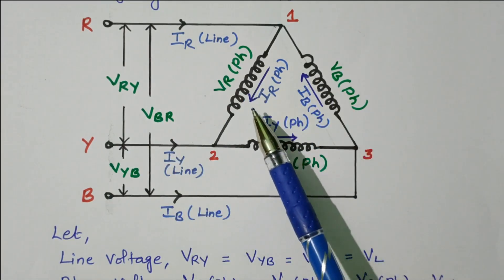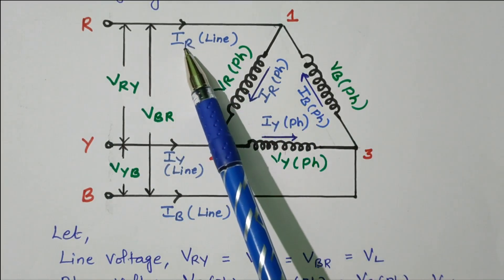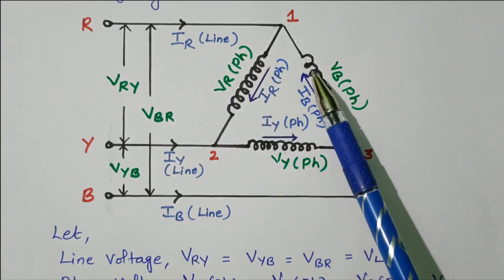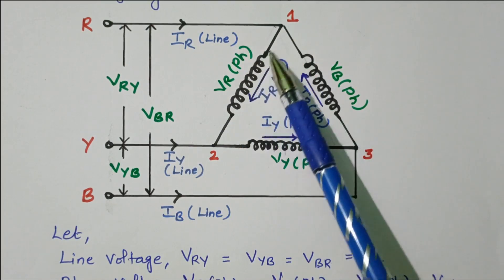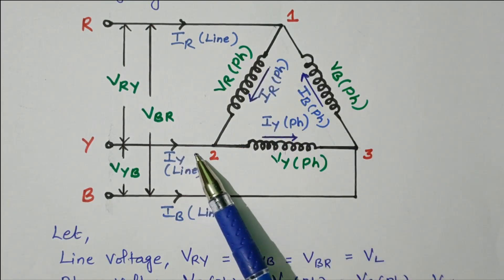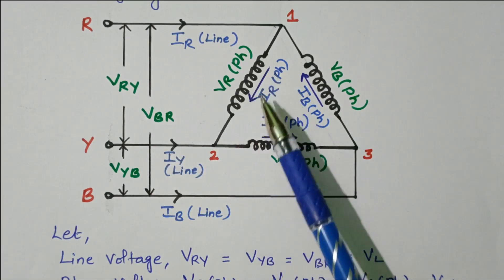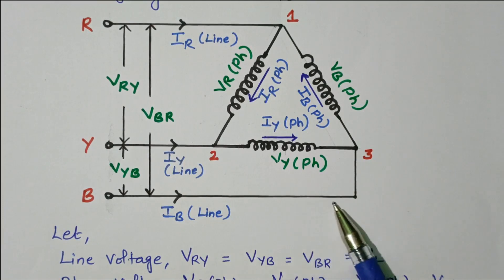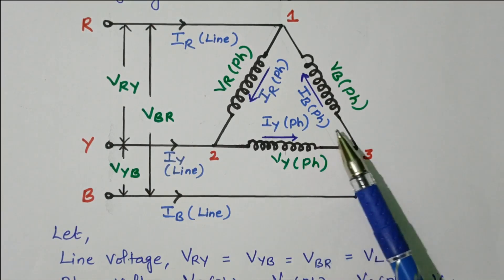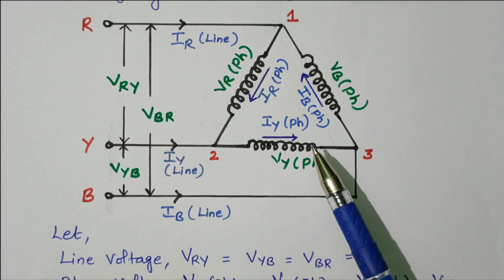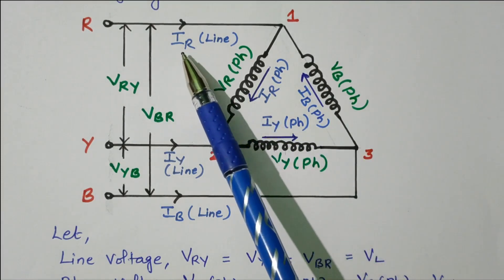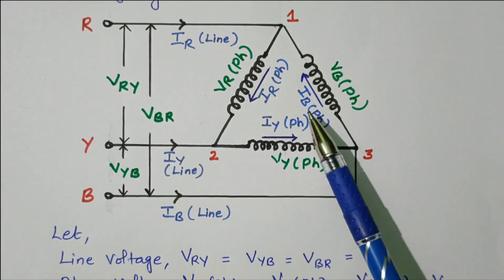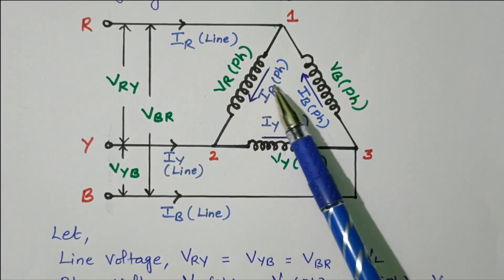Now we will refer to the phase voltage and phase current. The IR line current is split into two currents: IR phase and IB phase. Similarly, IY line current is split into IR phase and IY phase. IB line current is split into IY phase and IB phase. That is, the IR line current is the vector sum of IR phase current and IB phase current. So the line current is the vector sum of the phase current.